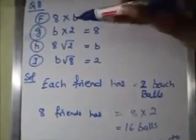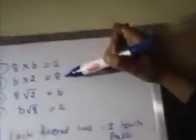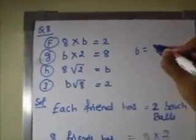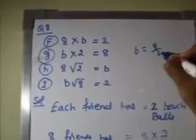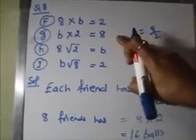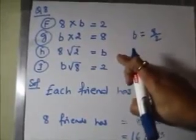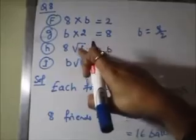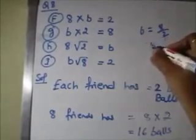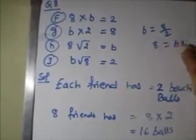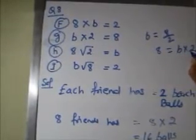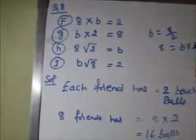Next option G: B × 2 = 8, so B = 8 ÷ 2, which is not equal to 16 — not the correct option. Next, option H: 8 × 2 ÷ 2 = B means B = 8, which is not equal to 16. This is not the correct answer.